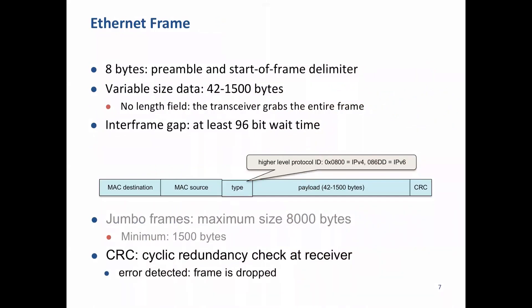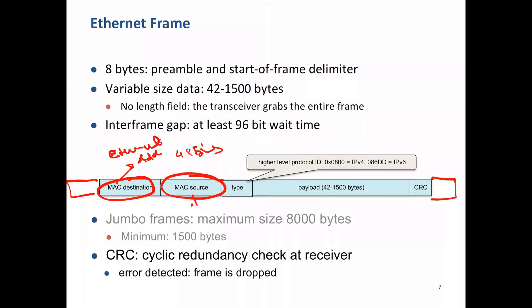The frame format remains the same throughout. We have fields for clock synchronization and start-of-frame delimiter. The MAC address — which is the destination address at layer two, also called the Ethernet address — is 48 bits. The source address, indicating which Ethernet card is sending, is also 48 bits. The type field indicates what contents are inside the frame; the payload in the internet world contains an IP packet, followed by a CRC.